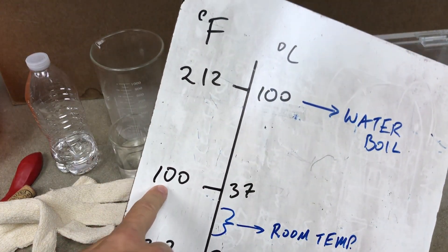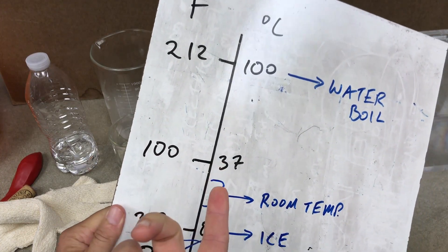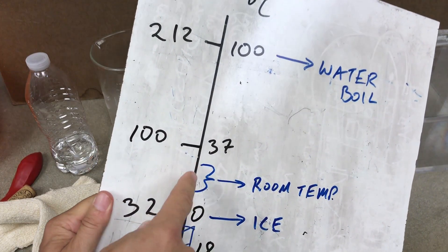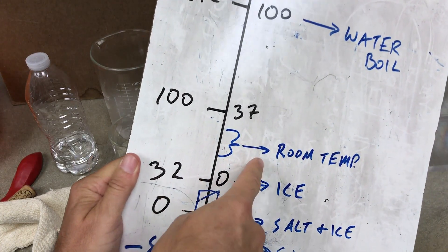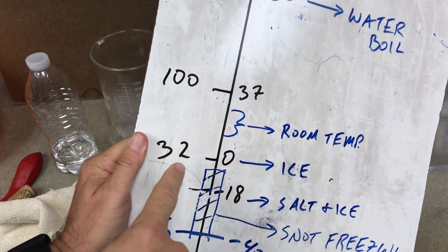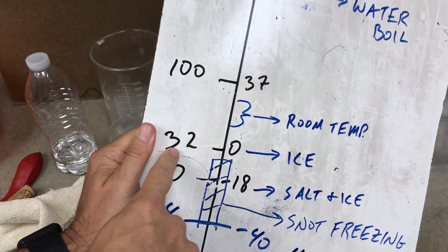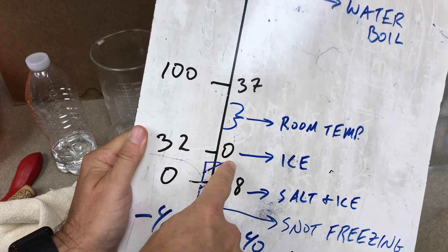We have 100 Fahrenheit, which is nothing except what's close to the body temperature, 37 Celsius. Room temperature somewhere around here, 32 Fahrenheit. That's freezing water, zero in Celsius.